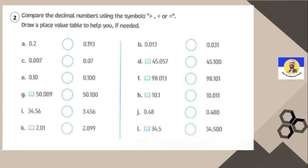Next: compare 0.2 and 0.193 using smaller than, greater than, or equal. The whole number part is zero — the same. In tenths, here it's 2 and here it's 1. Note that 2 in tenths is already greater than 1 in tenths, so 0.2 is immediately the greatest — you don't need to look further. If you want to confirm, add extra zeros to balance digits: 0.200 versus 0.193, which is 200 vs. 193.